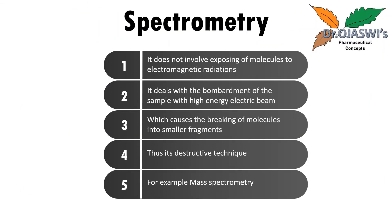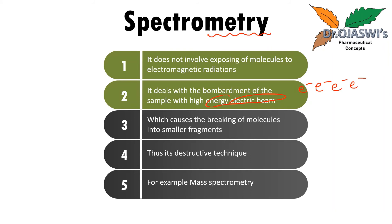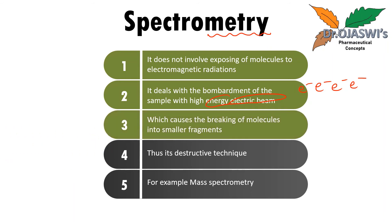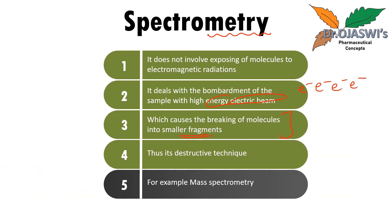On the other hand, we have something called spectrometry. Spectrometry does not involve exposing molecules to electromagnetic radiations. Instead, spectrometry deals with the bombardment of the sample with a highly energetic electron beam. That beam is bombarded onto the sample, which causes the breaking of molecules into smaller fragments. This means the sample molecule is broken into smaller fragments — it is a destructive technique, so you do not get your original sample back. A very good example of spectrometry is mass spectrometry.